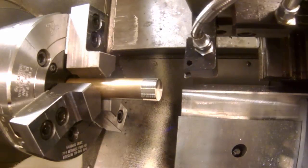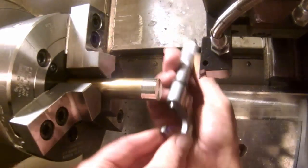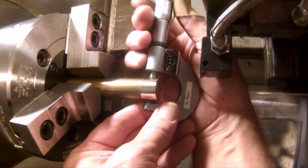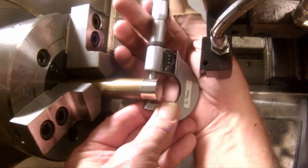Now make sure you don't move your X axis, only the Z. We're going to move Z out of the way so we can get our micrometer in there. We're going to get an accurate measurement.